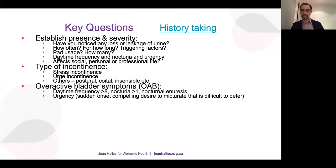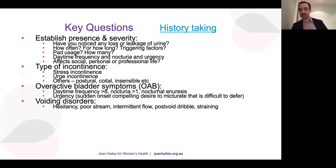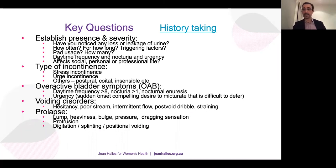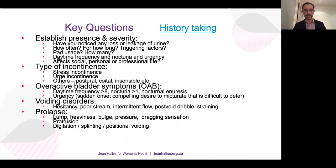Ask about overactive bladder symptoms: daytime frequency, nocturia, nocturnal enuresis, urgency. Ask about voiding symptoms: hesitancy, poor stream, intermittent flow, post-void dribble, straining. Ask about prolapse symptoms: lump, heaviness, bulge, pressure, dragging sensation, protrusion. Ask about digitation and splinting of the vagina or perineum to help voiding or opening bowels — this is very important to take into consideration.